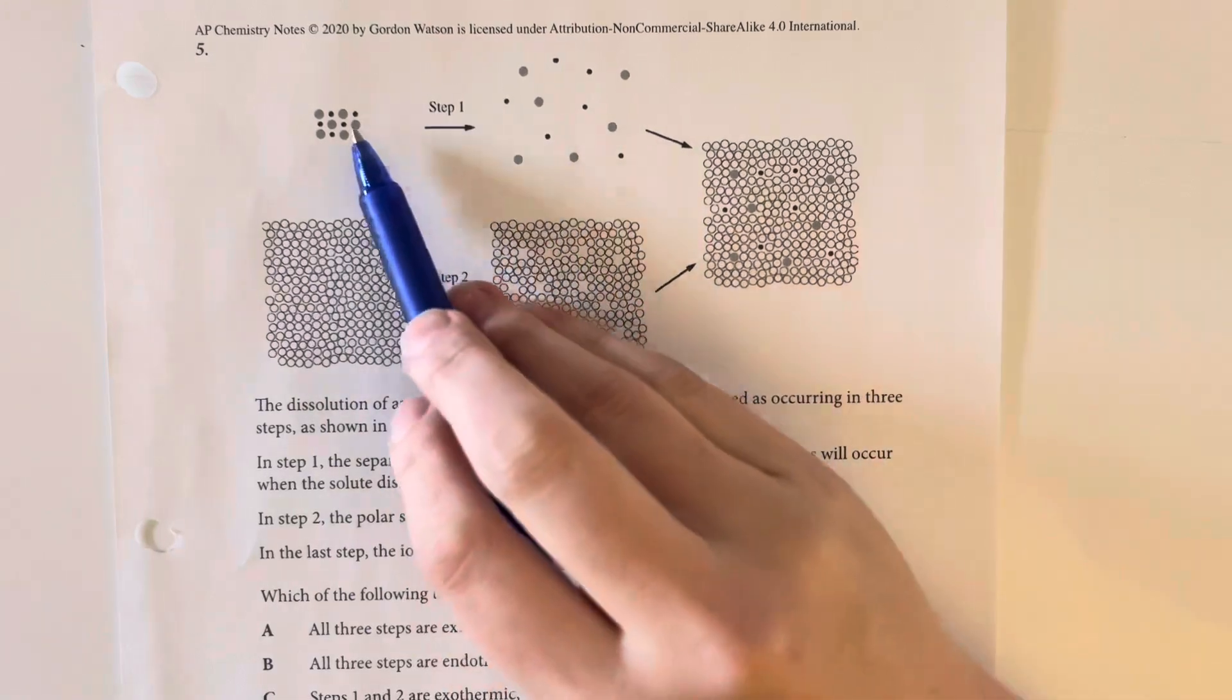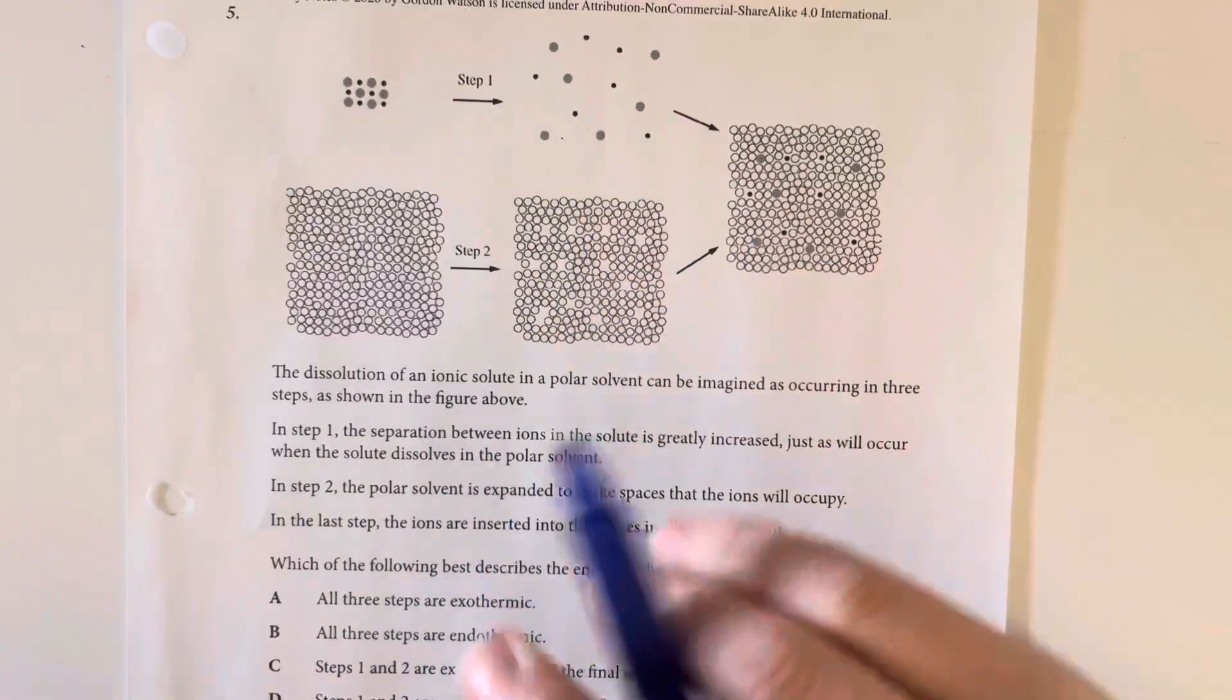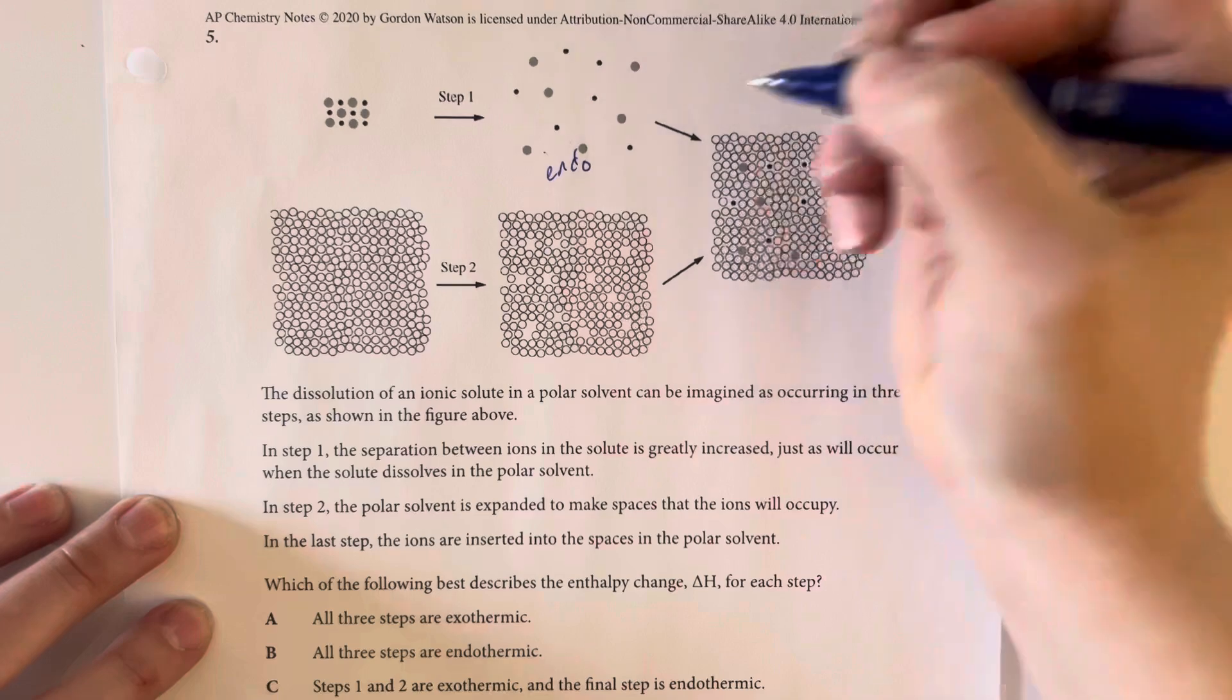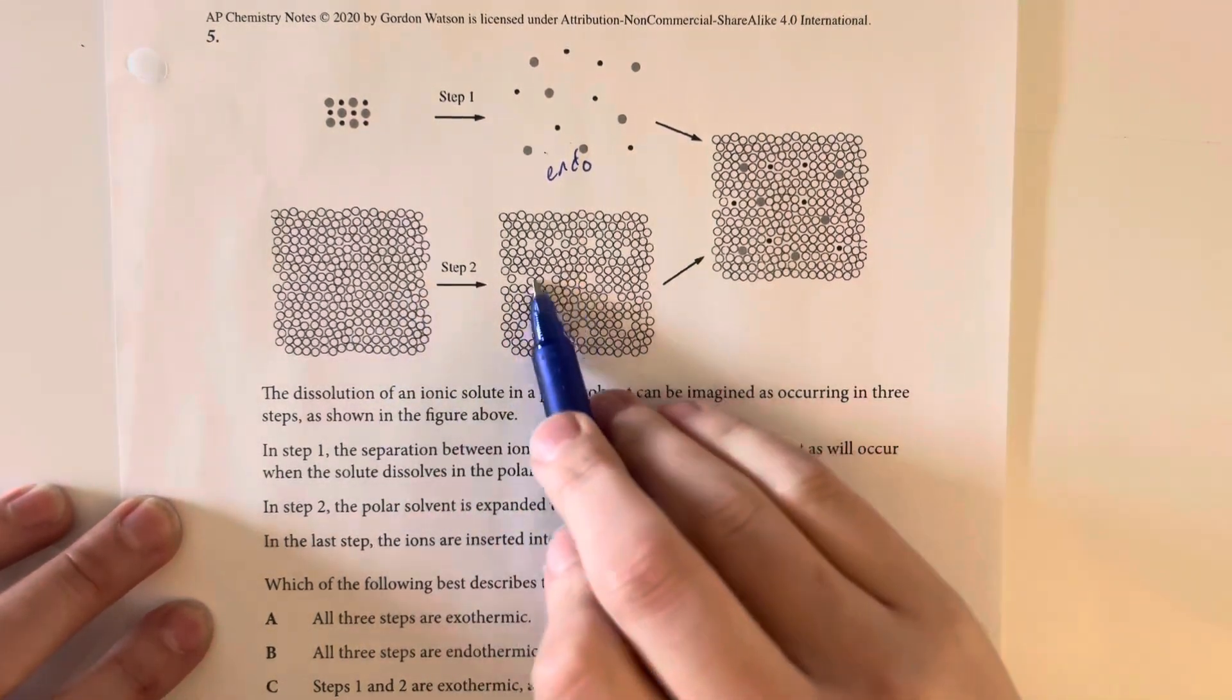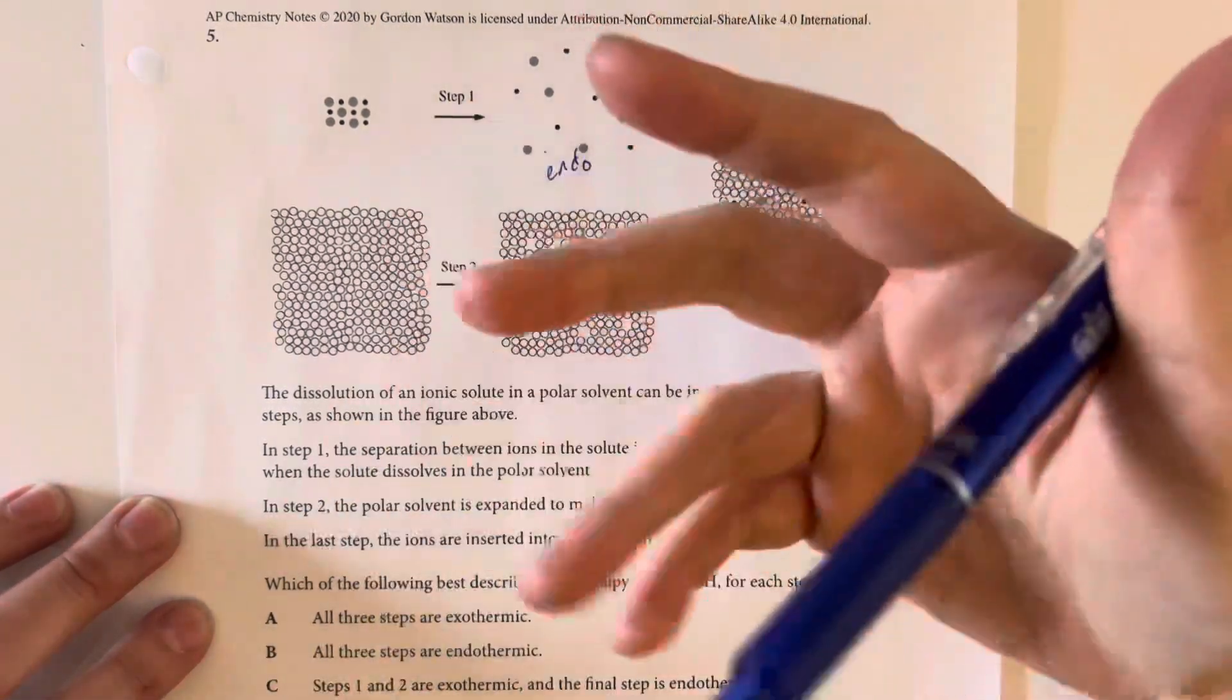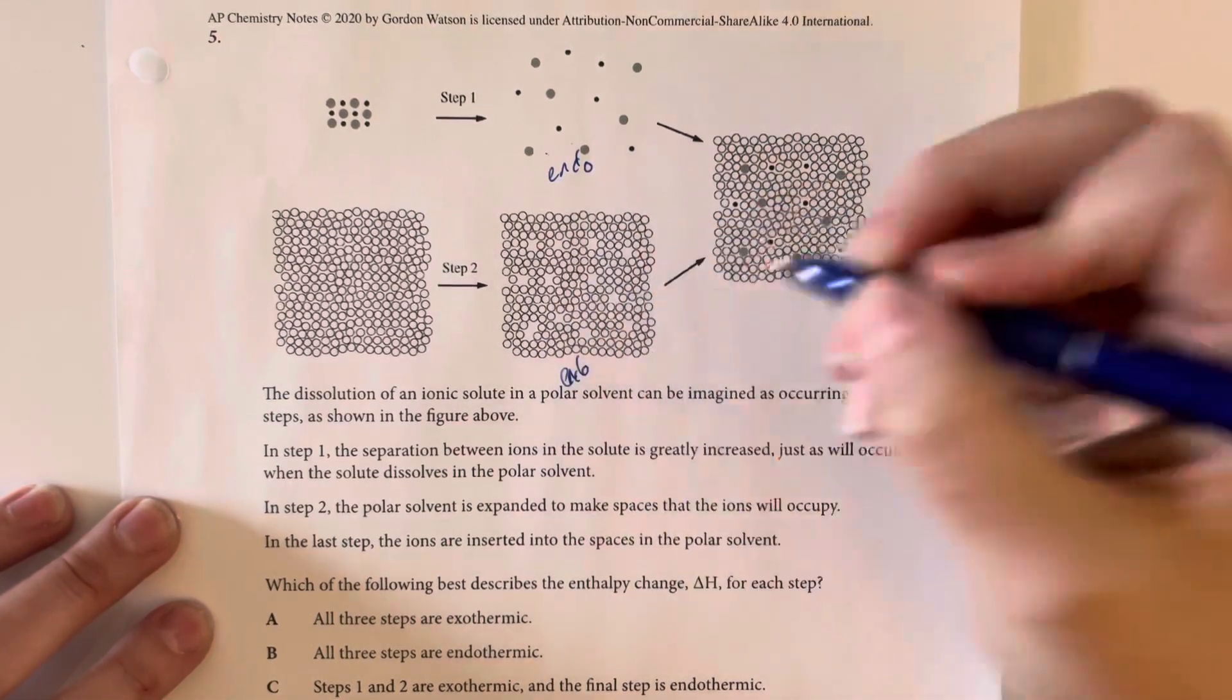So, taking the ions that are attracted to each other and getting them farther away from each other is going to require energy. So, that is going to be an endothermic process. Taking these water molecules, which are generally attracted to each other and then forcing them farther apart so that you have more room is also going to be an endothermic process.